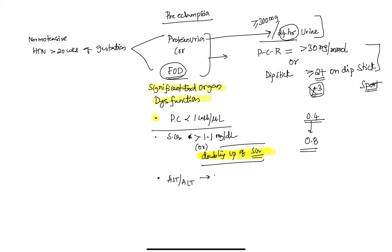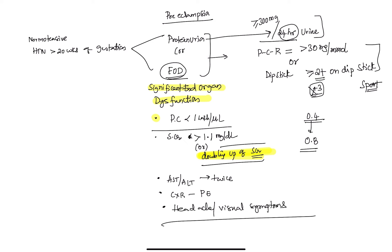Pulmonary edema on chest X-ray, or a patient complaining of breathlessness, or the patient complaining of headache, or visual symptoms — if any one of these cerebral or visual symptoms are present, we call it preeclampsia. So the definition of preeclampsia: it is similar to gestational hypertension, but the patient will have either proteinuria or significant end-organ dysfunction symptoms or signs such as low platelets, high serum creatinine, elevated liver transaminases, pulmonary edema on chest X-ray, or cerebral or visual symptoms.